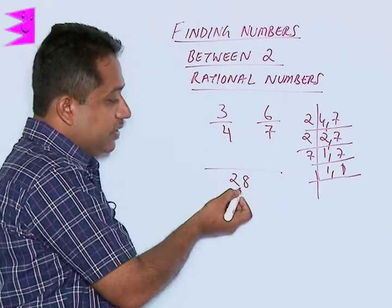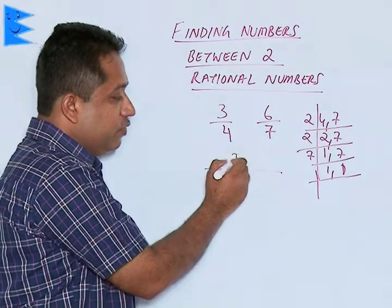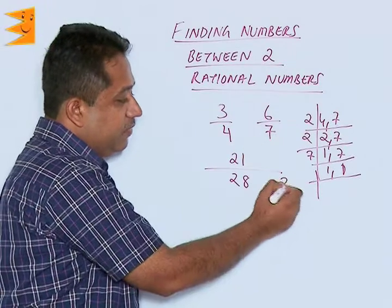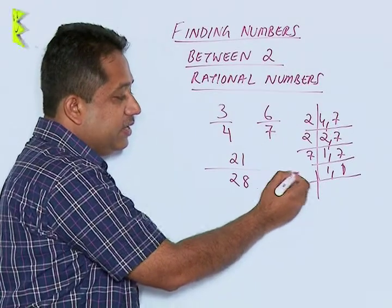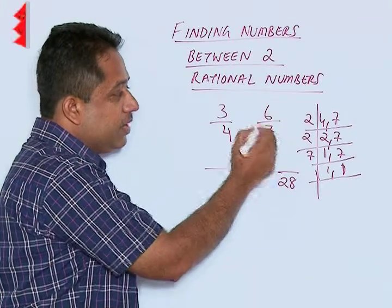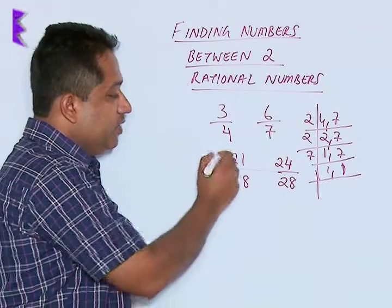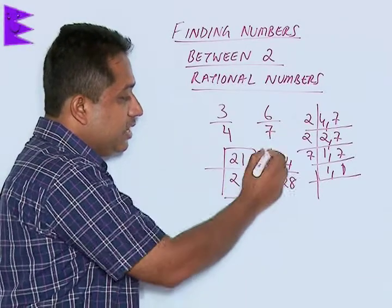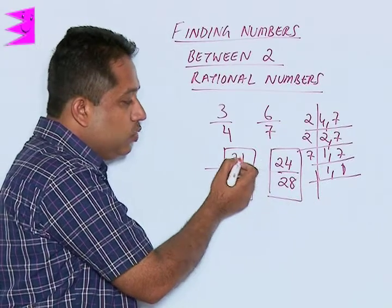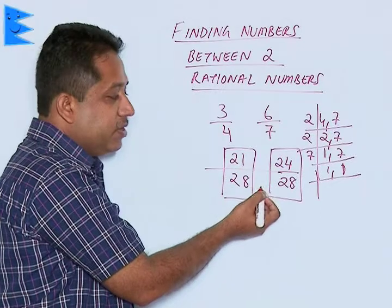4 goes 7 times in 28, so 7 into the numerator 3 gives us 21 upon 28. And here, 7 goes 4 times in 28, so 4 multiplied by 6 gives us 24 upon 28. So we are having 21 by 28 and 24 by 28. We find that there are only two numbers between them: 22 by 28 and 23 by 28.